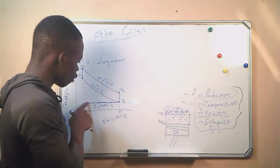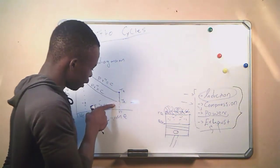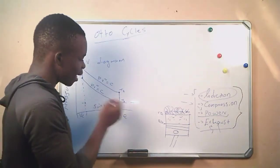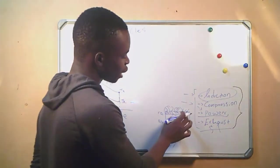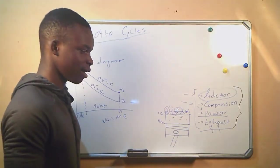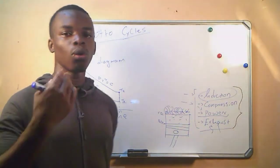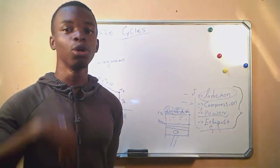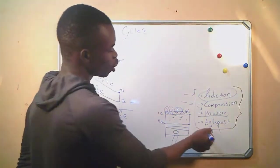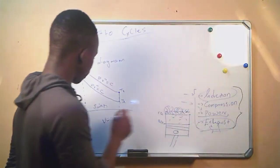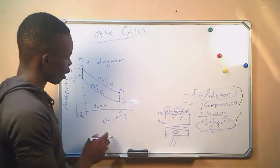Now, for the purpose of this analysis, we ignore this stage. We treat the air being used inside the system as the same air used over and over. Therefore, the induction and the exhaust strokes are not included. So this is what we call the PV diagram.